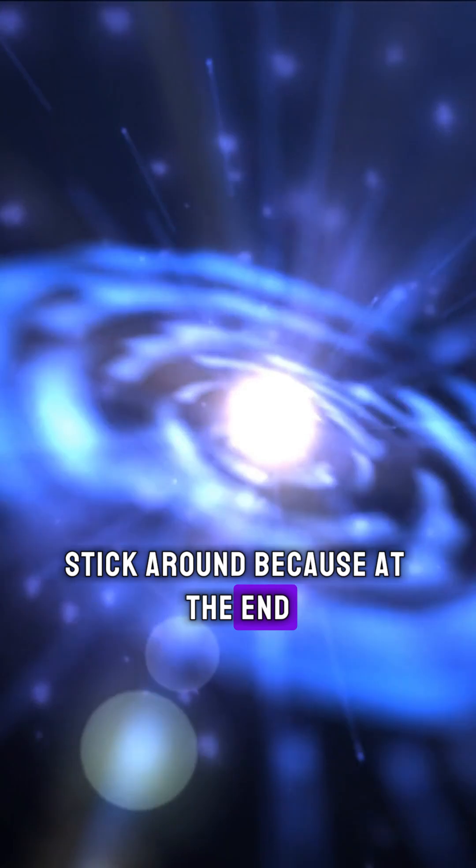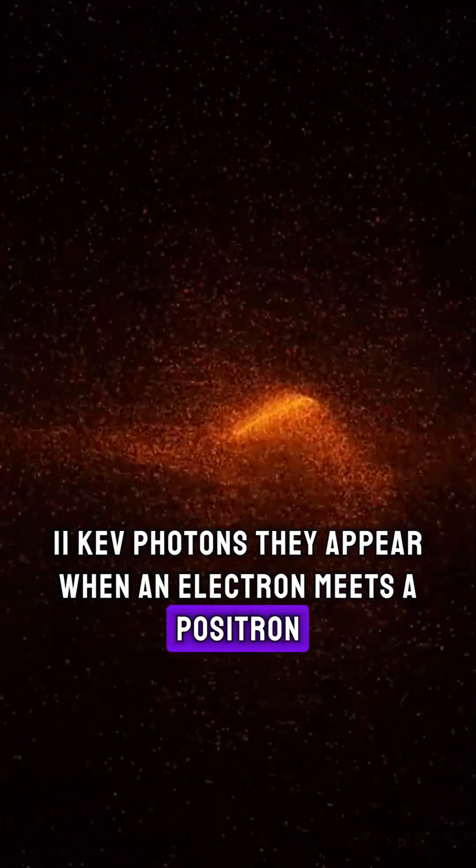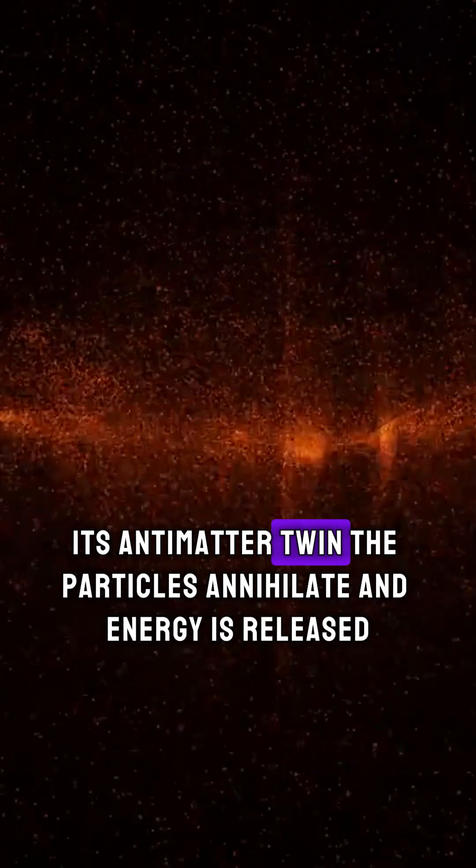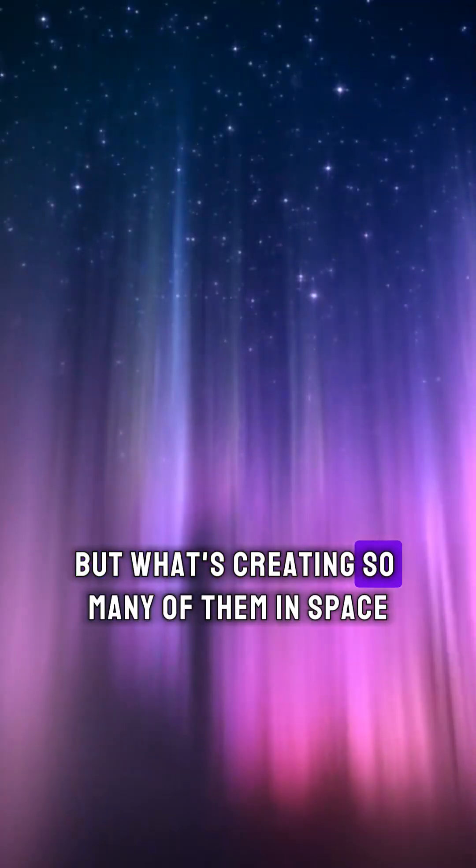Stick around, because at the end, we'll explain how this might lead us to invisible stars. These gamma rays are called 511 keV photons. They appear when an electron meets a positron, its antimatter twin. The particles annihilate, and energy is released. But what's creating so many of them in space?